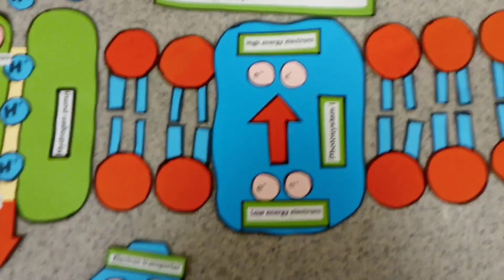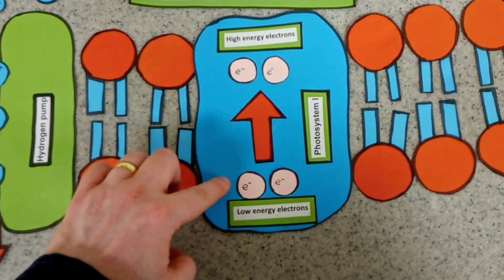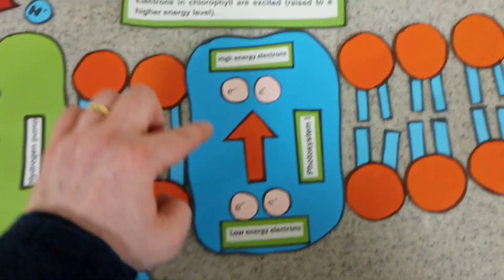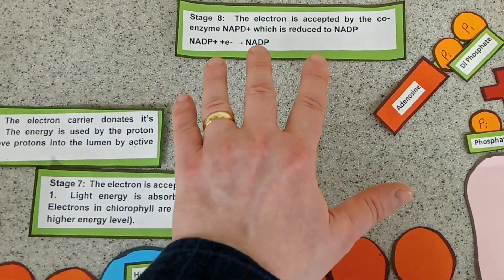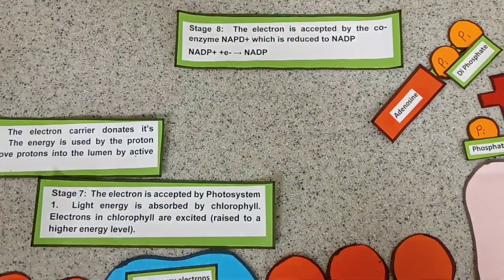In photosystem 1, light energy is used to move the electrons from a low energy level back to a high energy level, and these electrons then reduce NADP to NADPH2.